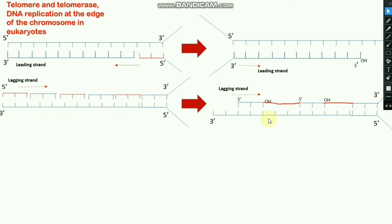In each and every replication cycle we could lose our genes from the 3' end of the lagging strand if there were no telomere and telomerase. This is where telomere and telomerase play their main important function.